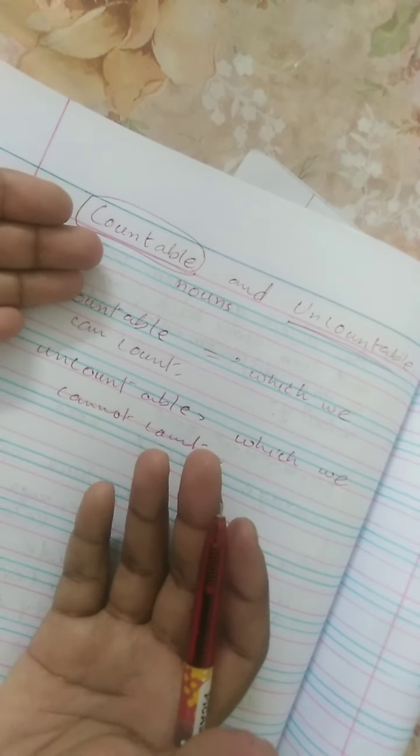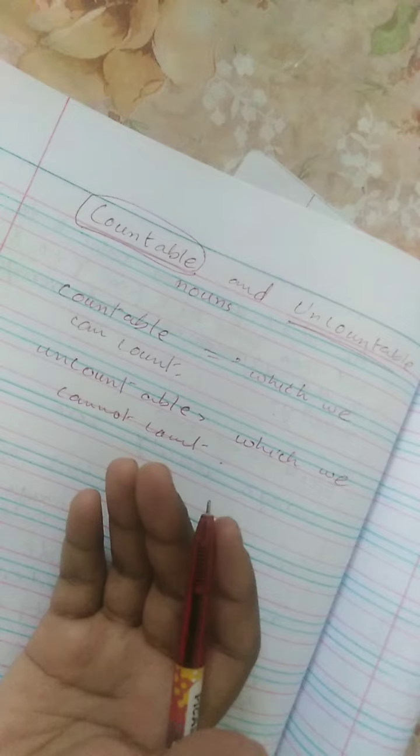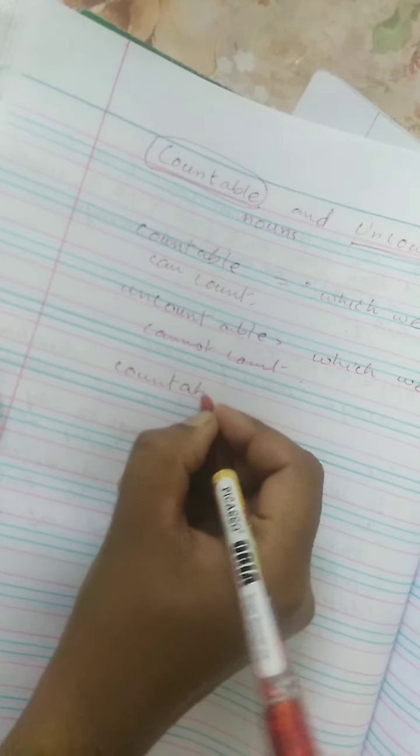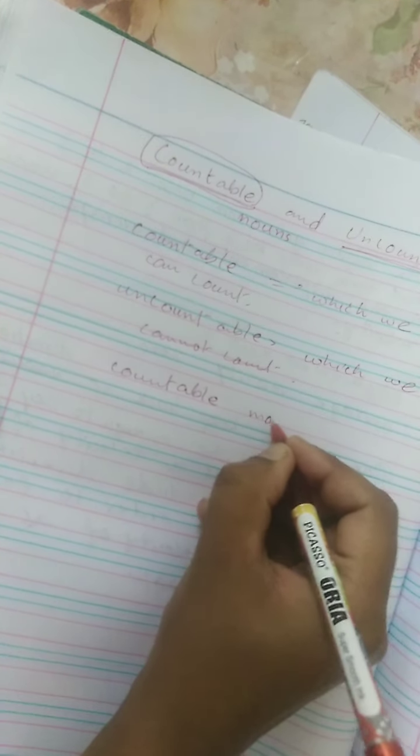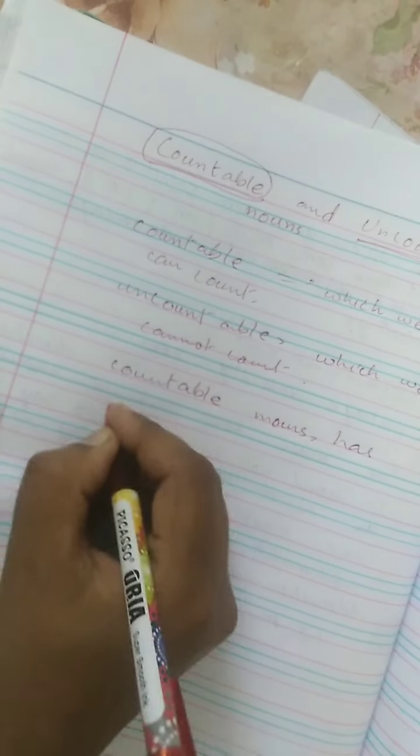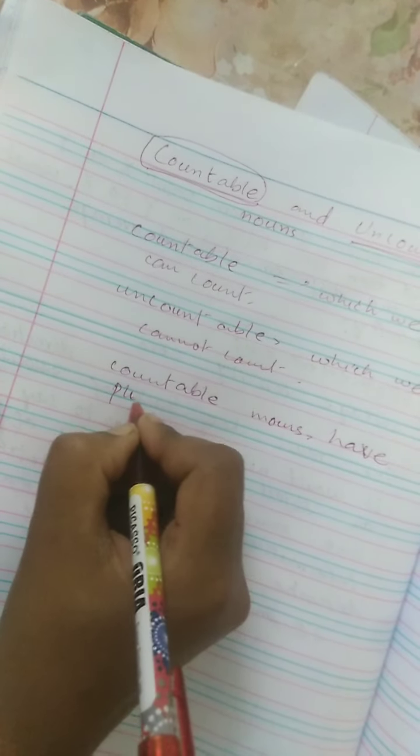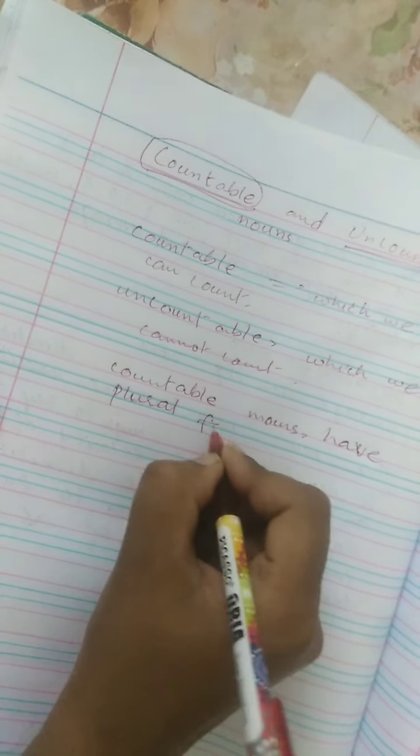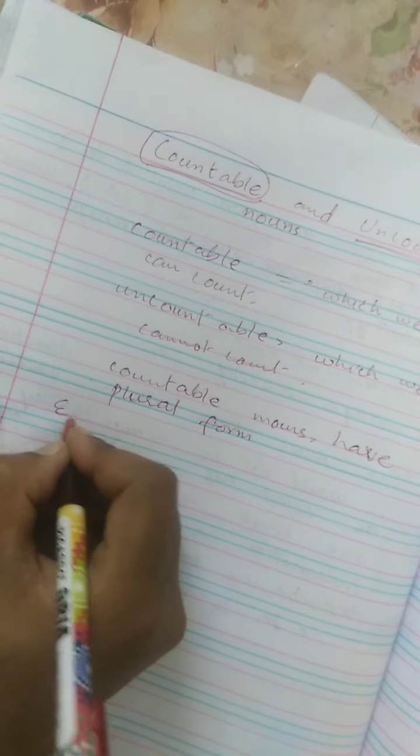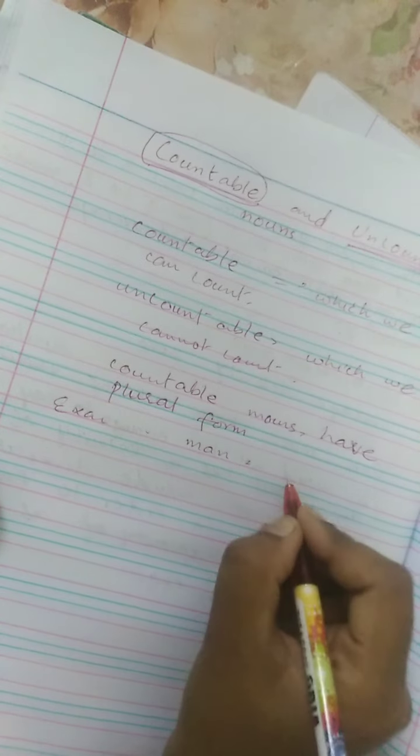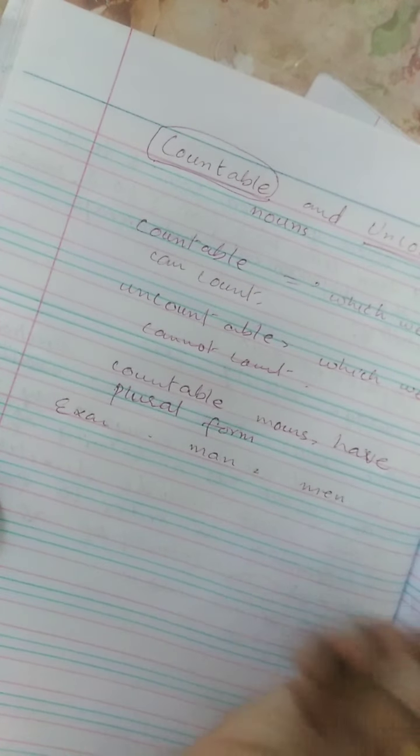So how we can recognize the difference between countable and uncountable nouns? First difference is that countable nouns have plural forms. Example kya hai is ki? Like, man countable hai, toh is ka plural ban jayega men.